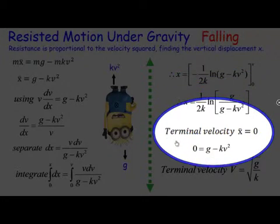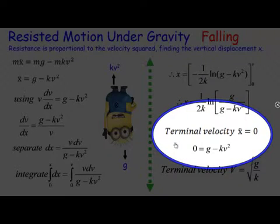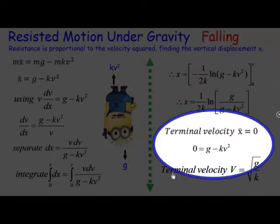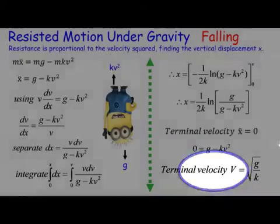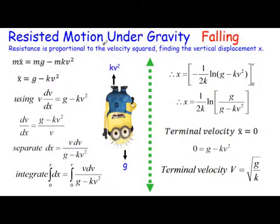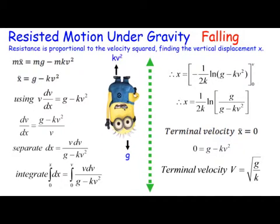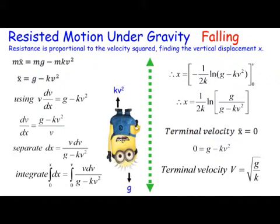This goes quickly through the terminal velocity. You might remember to get the terminal velocity all you have to do is let x double dot equals zero, this is the easy way, and then solve that. Eventually we get down here the terminal velocity is v equals root g over k. All right, so now the minion is actually falling. Positive direction down is actually the positive direction.